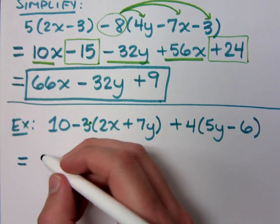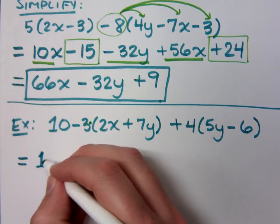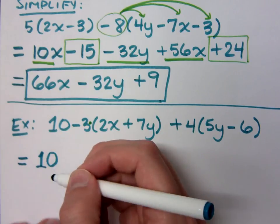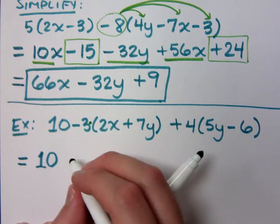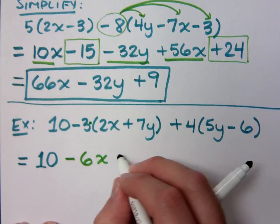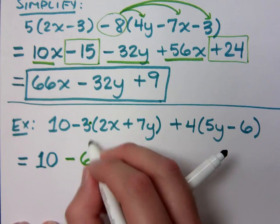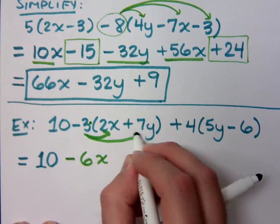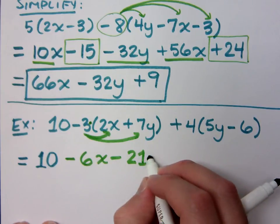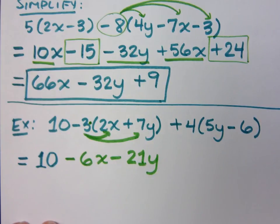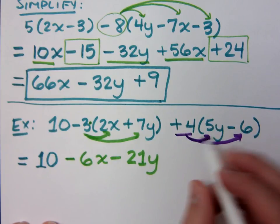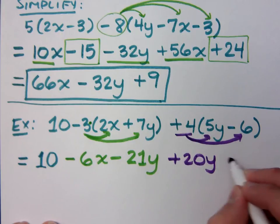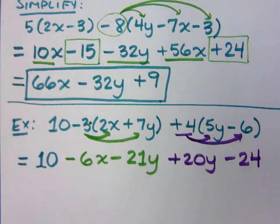So what does this equal? Well, that's just 10 right now. 10 minus 6x. Let's just piece by piece. So we have minus 6x. Minus 21y. Right? Plus. And then I need to distribute this plus 4. So what do I get? Plus 20y minus 24. Do you all agree?